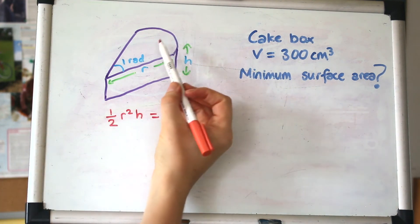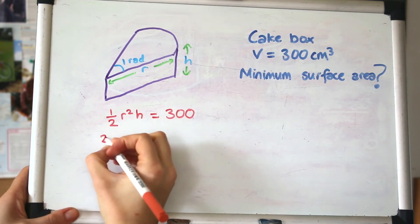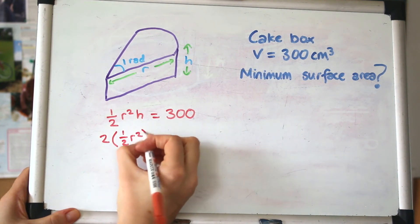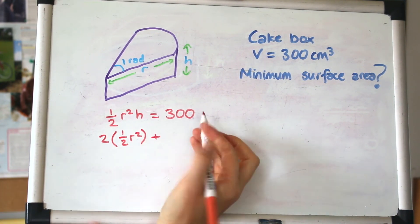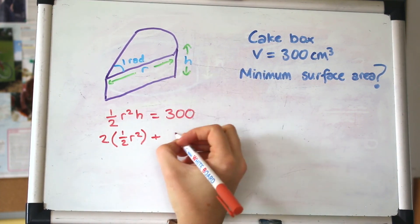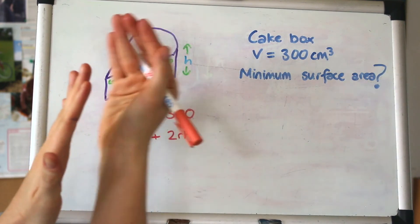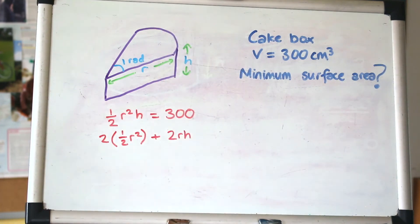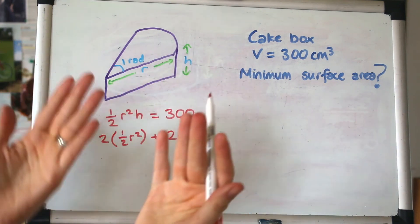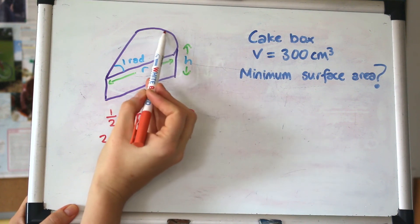The volume is the area of that sector, which is ½r²θ. r is r, and θ is 1, so we don't even need to write it in, which is great. So it's just ½r² here. That area times by h is our volume, and we know that's 300. Then we'll make our expression for the surface area. We've got area of the sector on the top and the bottom, so two of those, which is 2(½r²) = r².